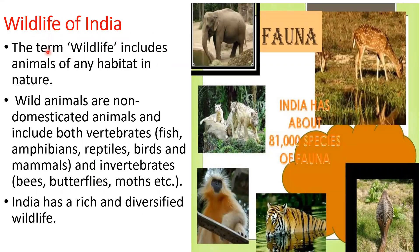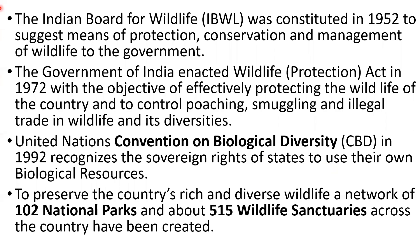Wildlife of India — the term wildlife includes animals of any habitat in nature. Wild animals are non-domesticated animals and include both vertebrates like fish, amphibians, reptiles, birds, and mammals, and invertebrates like bees, butterflies, moths, etc. India has a rich and diversified wildlife with about 81,000 species of fauna. The Indian Board for Wildlife (IBWL) was constituted in 1952 to suggest means of protection, conservation, and management of wildlife. The Government of India enacted the Wildlife Protection Act in 1972 to effectively protect wildlife and to control poaching, smuggling, and illegal trade in wildlife.